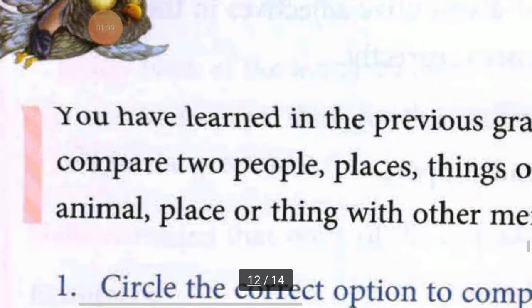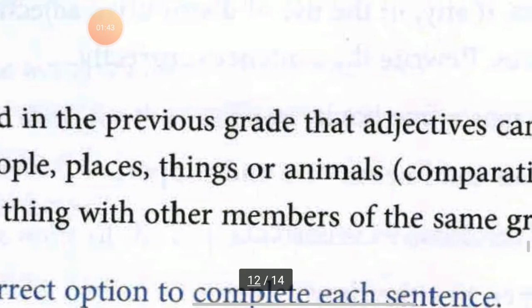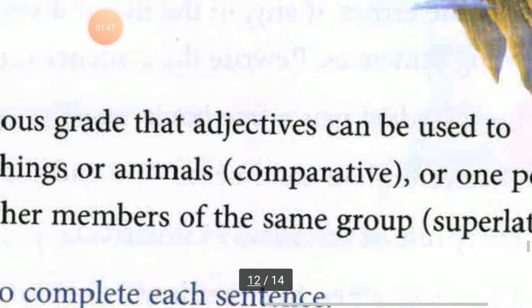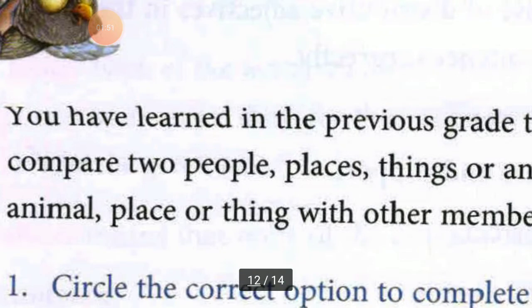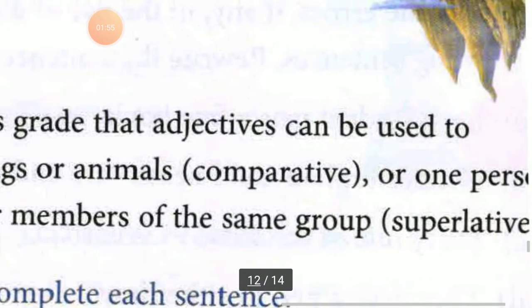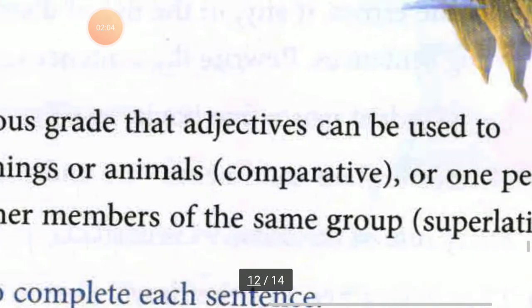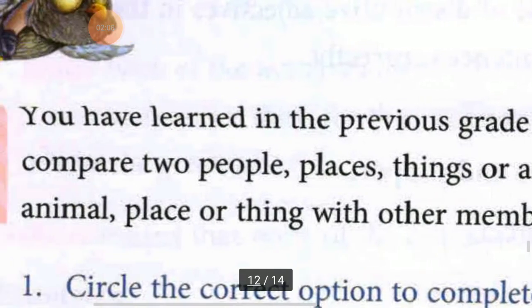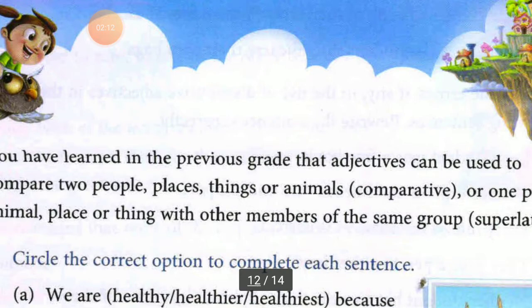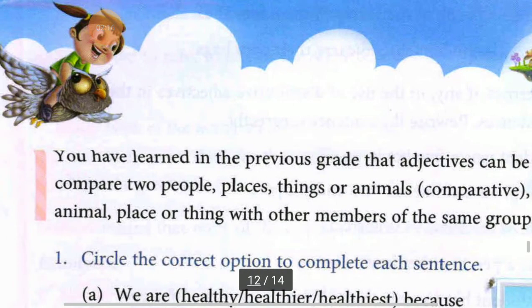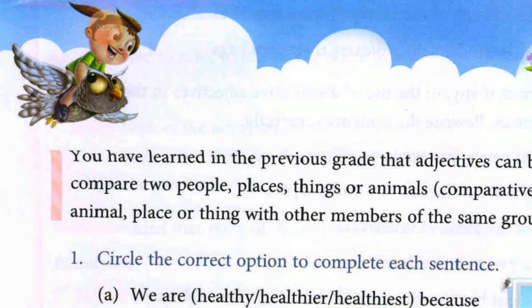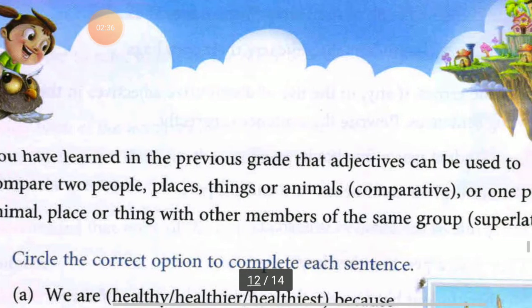You have learned in the previous grade that adjectives can be used to compare two people, places, things, or animals, or one person, animal, place, or thing with other members of the same group. Aapne pichli class mein adjectives ke baare mein padha hoga — jinhe hum use kar sakte hain logo ki, jagahon ki, vastuon ki, ya praniyon ki tulna karne ke liye. Aisi adjectives ko comparative kehte hain.